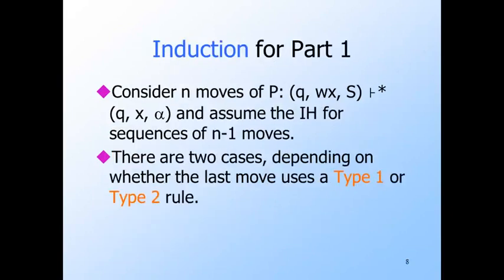Now let's do the induction. We'll consider the result of n steps of P. That is, this ID has become that ID. And we'll assume the inductive hypothesis for sequences of n minus one steps. We must consider type one and type two moves as the last step separately.